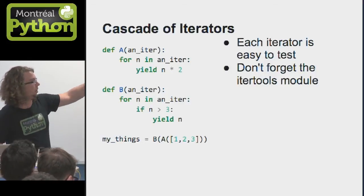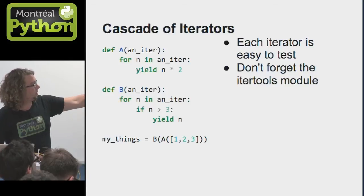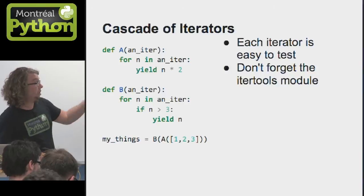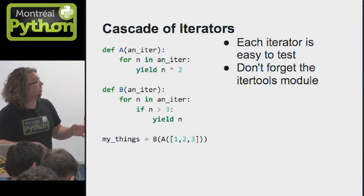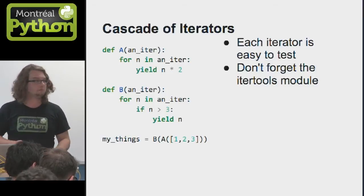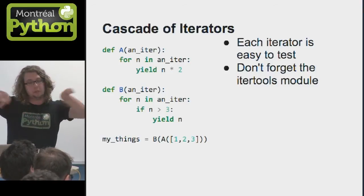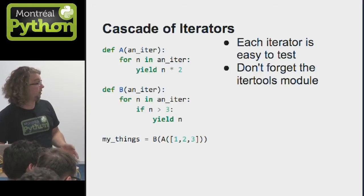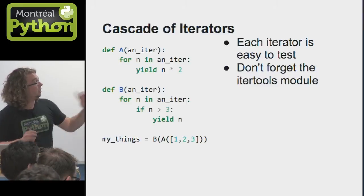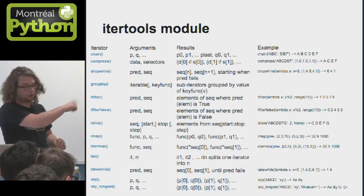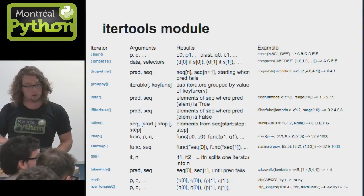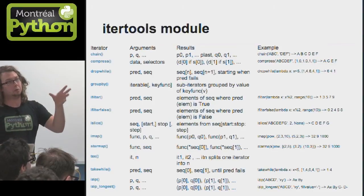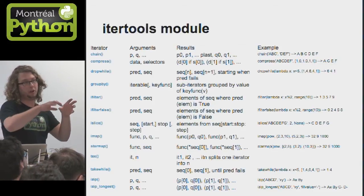And then it's going to be applied on the second iterator, which is if n is greater than three, which is false, so it won't be returned. So in the end, you're going to have a result which is going to be four and six. By separating your logic iterators, it's going to be really easier to test. And also, don't forget, the itertools module that Rory talked about a few months ago has plenty of really amazing functions that are going to be useful when you're dealing with iterators.